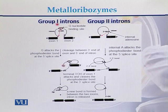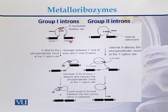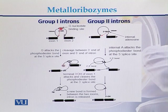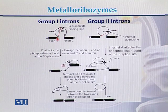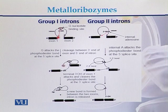What is the difference between group 1 introns and group 2 introns? In case of group 1 introns, we have exon 1 and exon 2, and between these two exons there is an intron. A G that is present within the sequence of the intron attacks the phosphodiester bond at the 5' splice end — this is the 5' splice end between exon 1 and the intron.